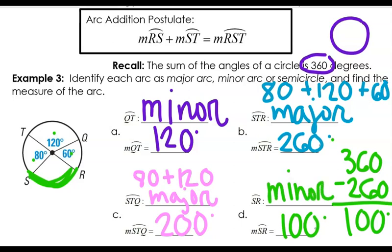I hope this is getting easier. You can add up the little pieces if you need to to get a bigger arc, or if you know the central angle, it's exactly the same as the arc measurement.